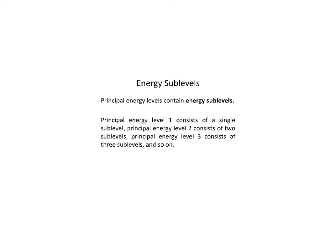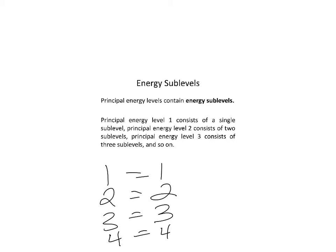Now, energy sublevels. Principal energy levels contain energy sublevels. Principal energy level 1 consists of a single sublevel. On your paper under principal energy level 1, put 1. So: 1 has 1 sublevel, 2 has 2 sublevels, 3 has 3 sublevels, 4 has 4 — but 5, 6, and 7 all only have 4. There are only 4 types of sublevels, so they can't contain any more than 4.